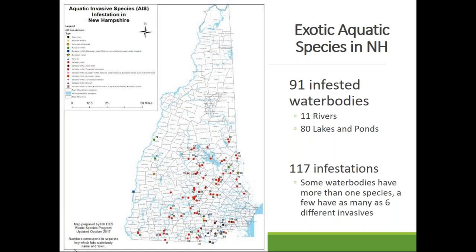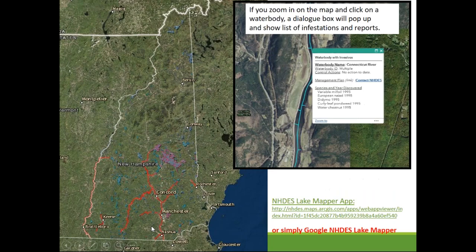The Connecticut River and Nashua River are the ringers, each with six different invasive species, but most of our lakes just have one. The DES Lake Mapper app — searchable by Googling NHDES Lake Mapper — lets you click on any water body to get VLAP reports, lake assessment reports, invasive species information, and any long-term management plans.